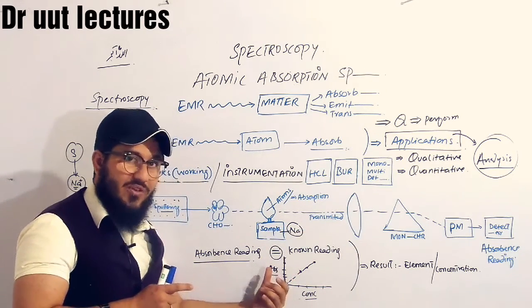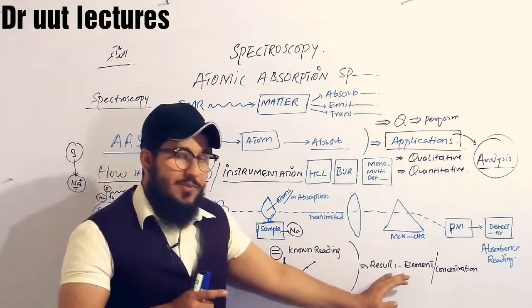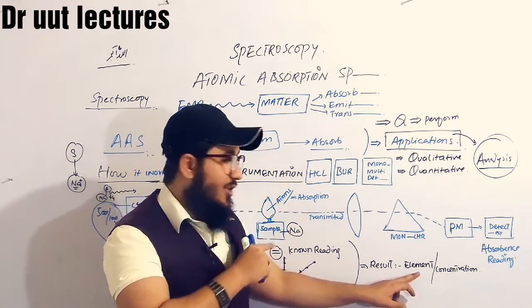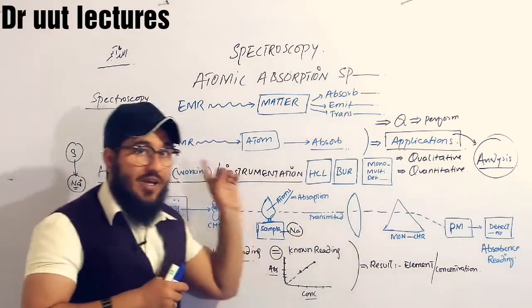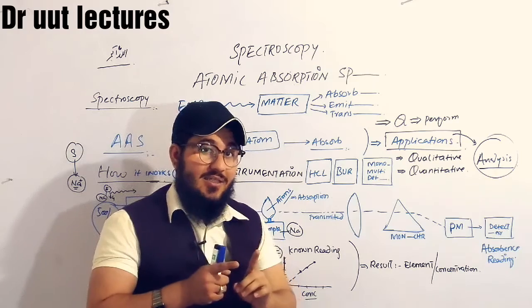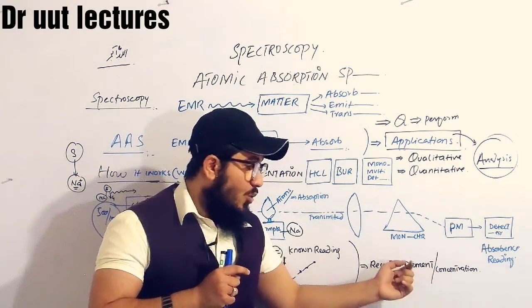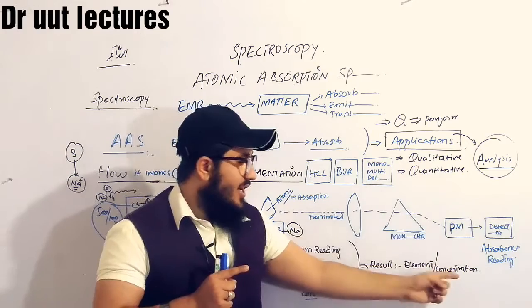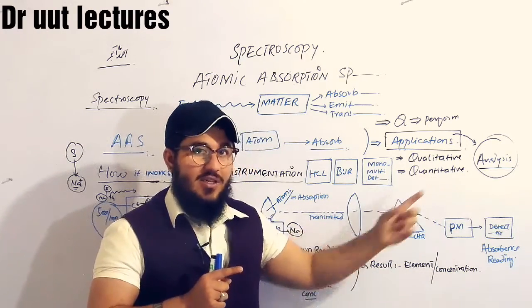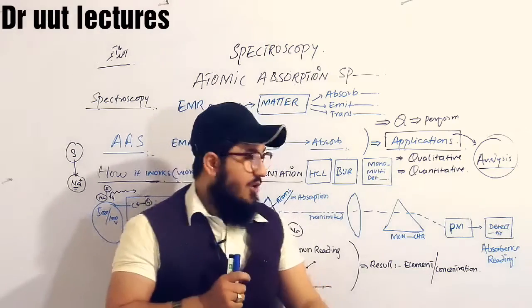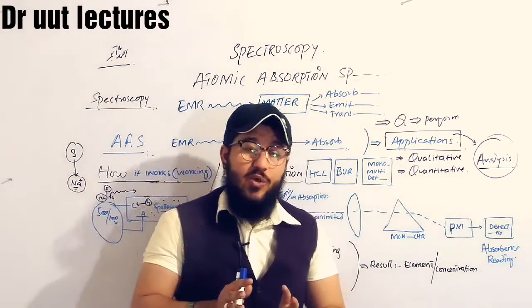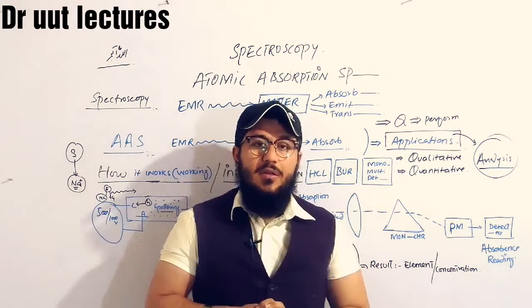On the x-axis we have concentration and on the y-axis we have absorbance. After interpretation, we will come to know whether our element was present or not, and if present, what was the concentration of our element. This is how atomic absorption spectroscopy helps us in analysis — elemental analysis, which is qualitative, and concentration analysis, which is quantitative. By means of AAS, we can do both qualitative and quantitative analysis. If you have any questions, drop them in the comment box.